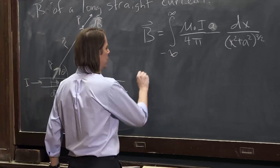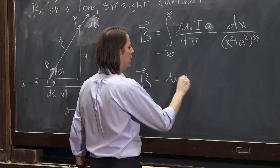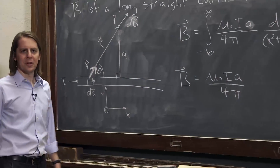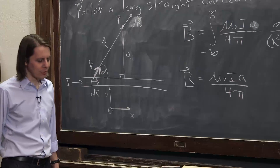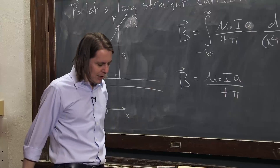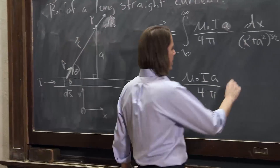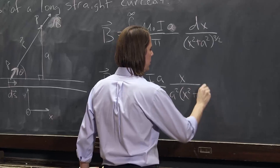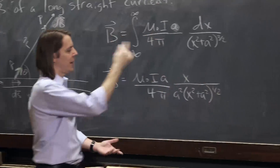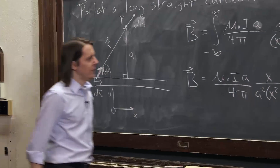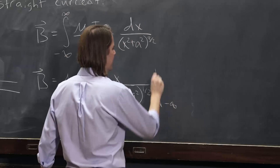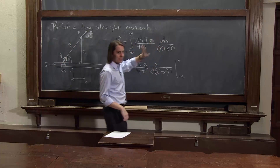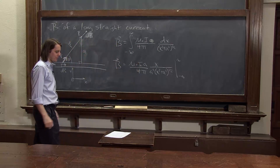So B equals — let's keep these constants — mu-naught pi A over 4 pi. Now, how to do that integral. It's not an easy one. That's one of those you look up in a table or put in your computer, or go through and integrate by parts or some horrible thing like that. But that integral, in the end, gives you x over A squared times the quantity x squared plus A squared to the 1 half. Then you evaluate that from minus infinity to infinity. If you don't believe me, you can take the derivative of this and you'll get that — I promise I've done it. All a bunch of terms cancel and it works.